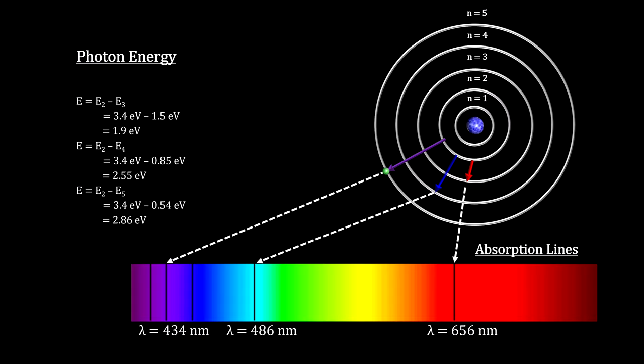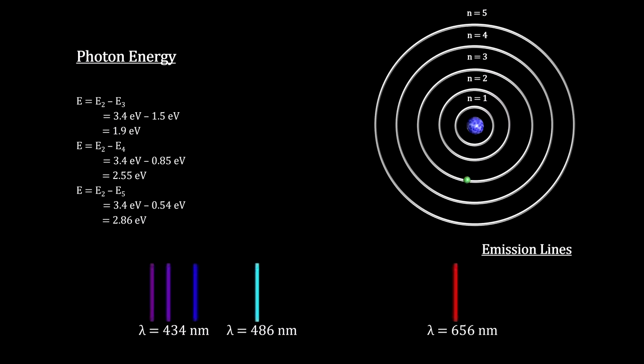When the electron drops from this excited state back to a lower energy level, a photon with the exact difference between energy levels is emitted. This creates emission lines that we can see in the lab.